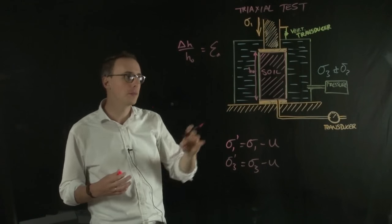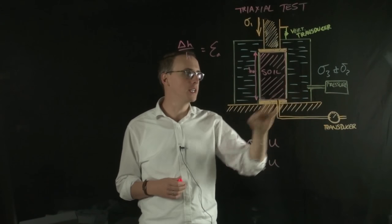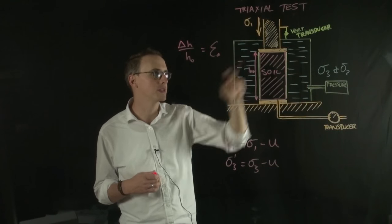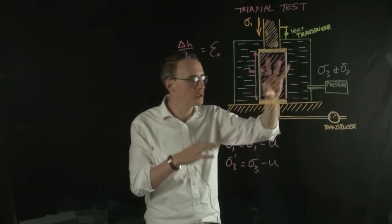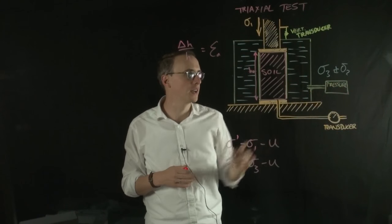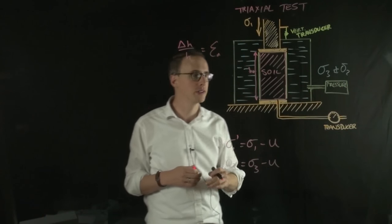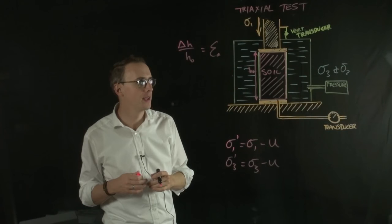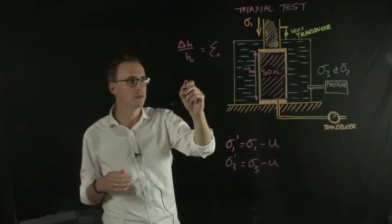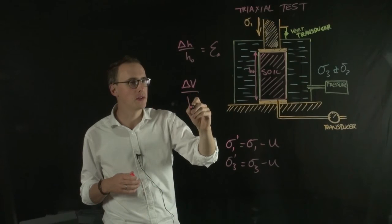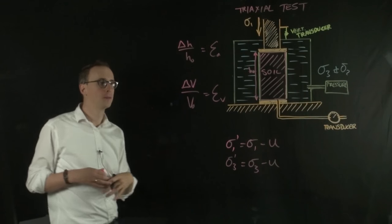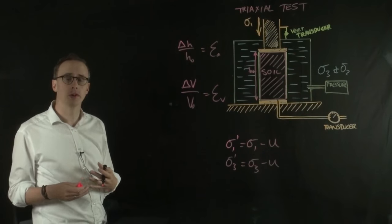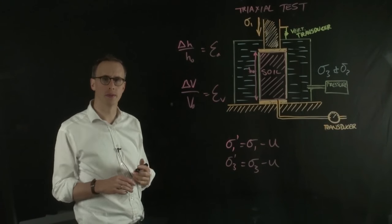We also monitor the change in volume of the water within the cell. If the sample increased in volume, it would push some water out of the cell. If we take the change in volume and divide it by the initial volume, we get the volumetric strain. These are the things we monitor in a triaxial test.